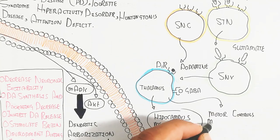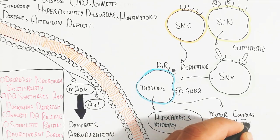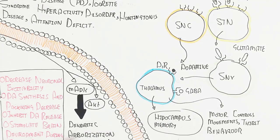The thalamus is used for motor control, movement, thirst, behavior, and emotion through the hippocampus also.